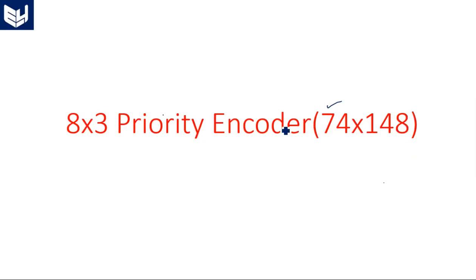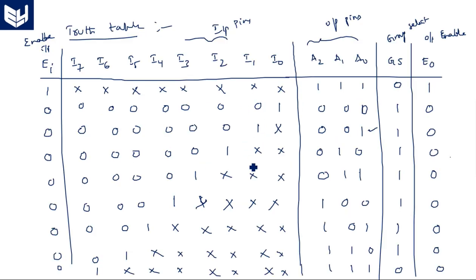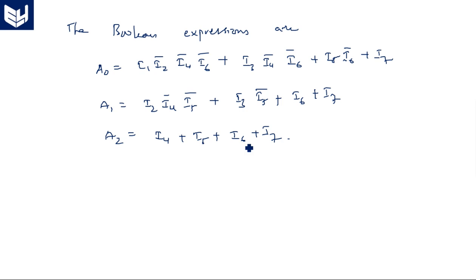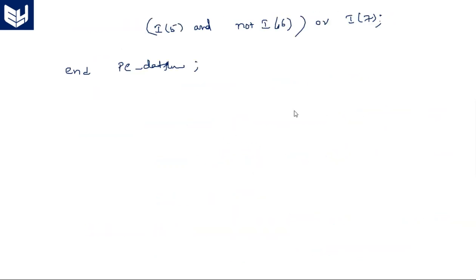Hi everyone, in this video I am going to explain how to write a behavioral VHDL code for 74148 8-by-3 priority encoder. In the last classes we came across this priority encoder with the logic diagram, the truth table, and the boolean expressions, and later we went through the dataflow VHDL model for this 74148. In this video we are going to see the behavioral style.